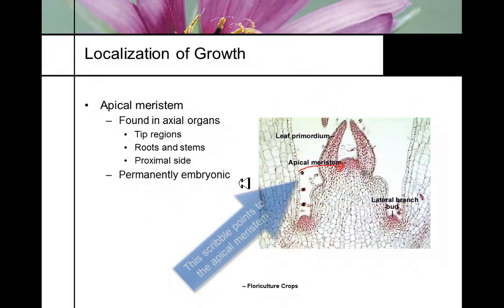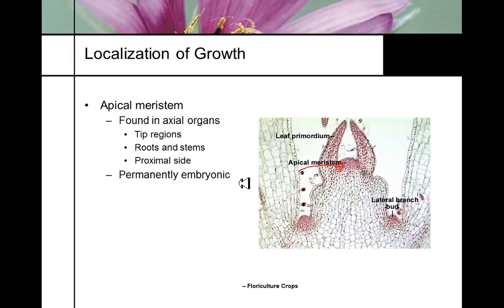The apical meristem is the primary meristem we think about. Apical meristems are found in the tip regions where plant growth occurs — tips of stems, tips of roots, typically on the proximal side. Apical meristems are what we call permanently embryonic. For instance, in a cross-section of a coleus stem, the apical meristem is the complex in the middle, with lateral meristems down below.